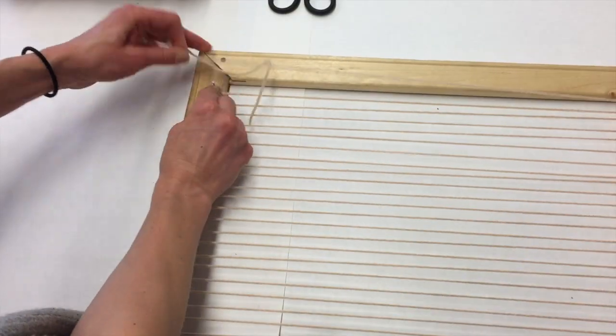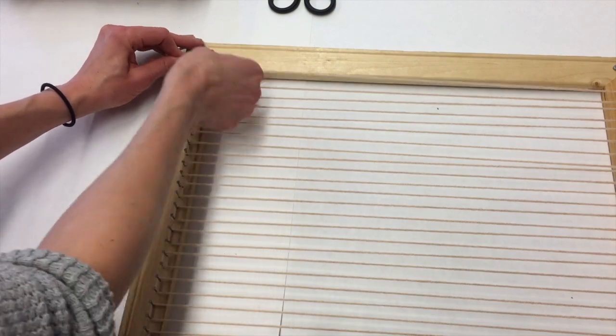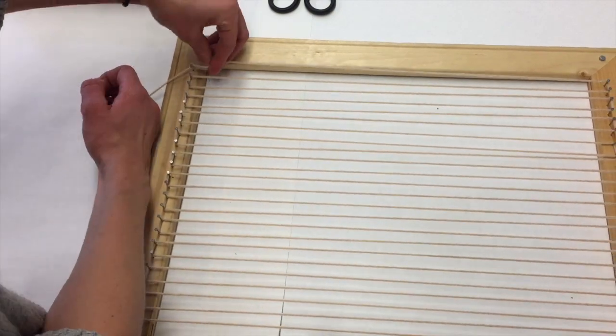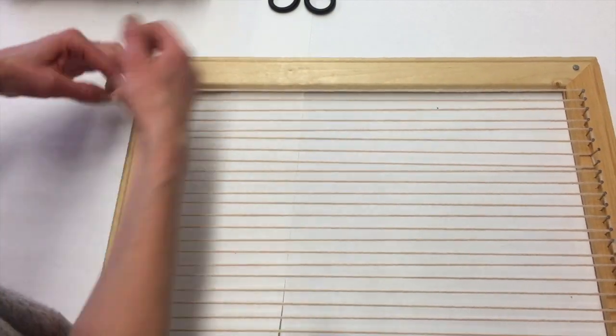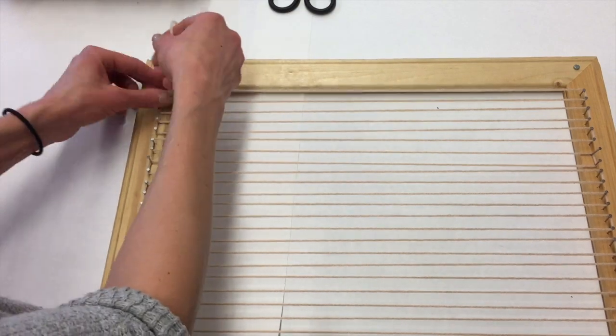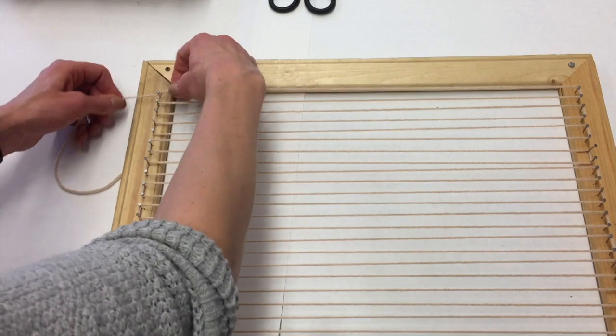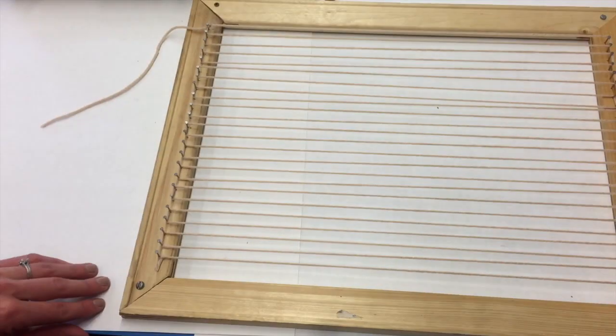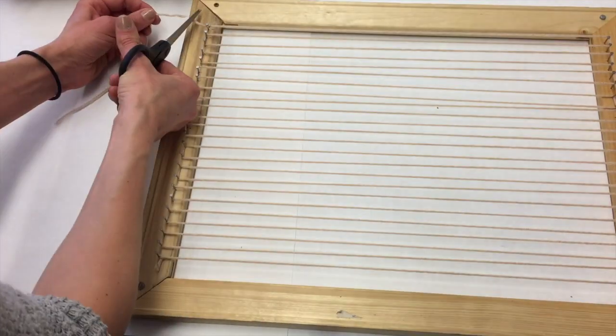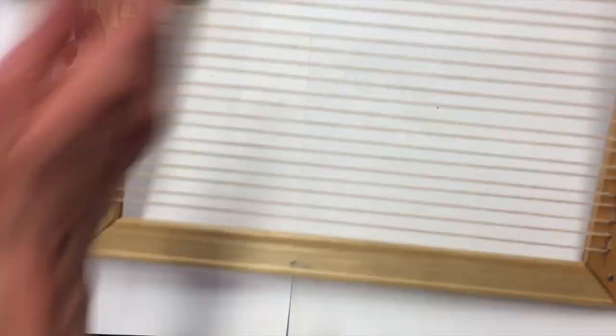I'm going to go ahead and tie this string onto the nail just like I did at the beginning, and I really want to make sure that I'm keeping the tension as much as possible with my warp strings so that my weaving will go a little bit easier. After that's done, all you need to do is trim your edge and you are ready to begin.